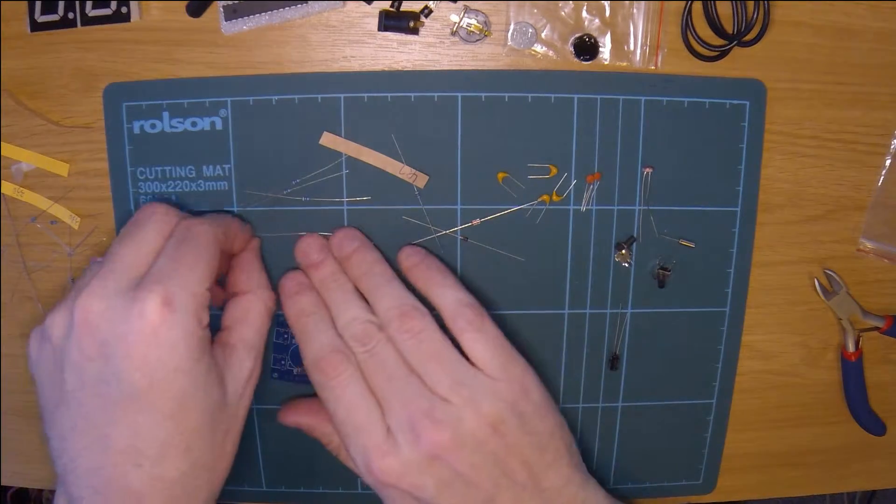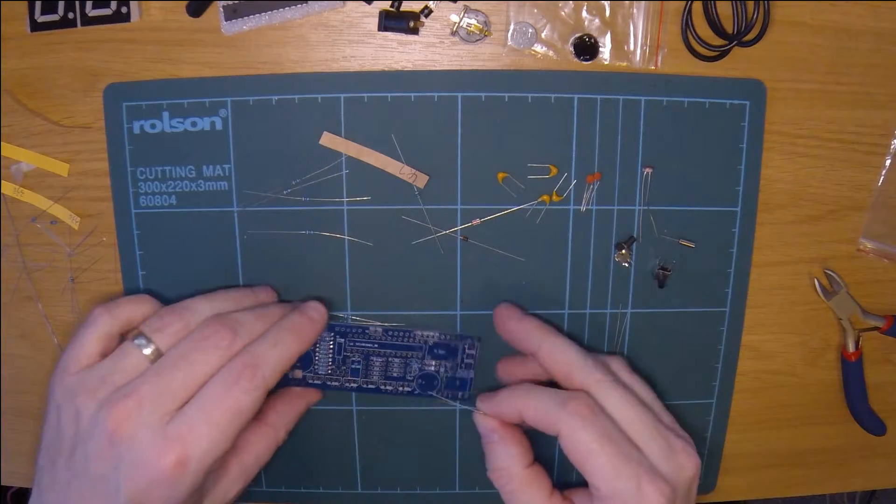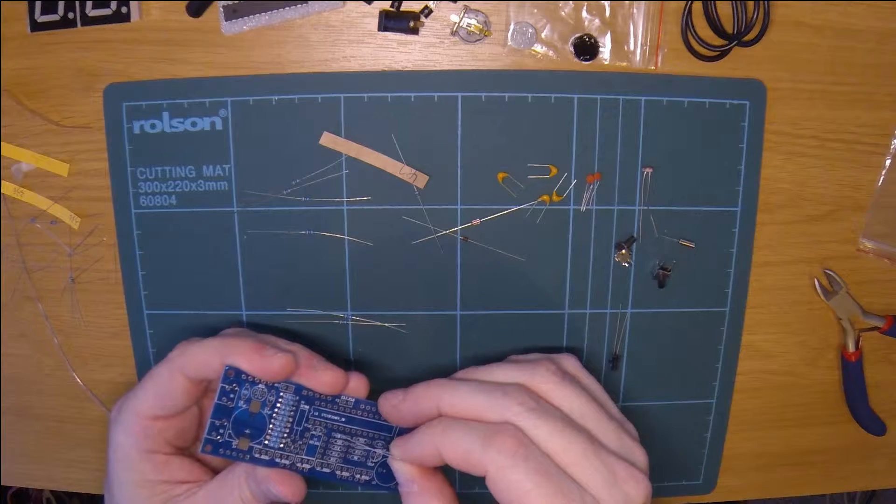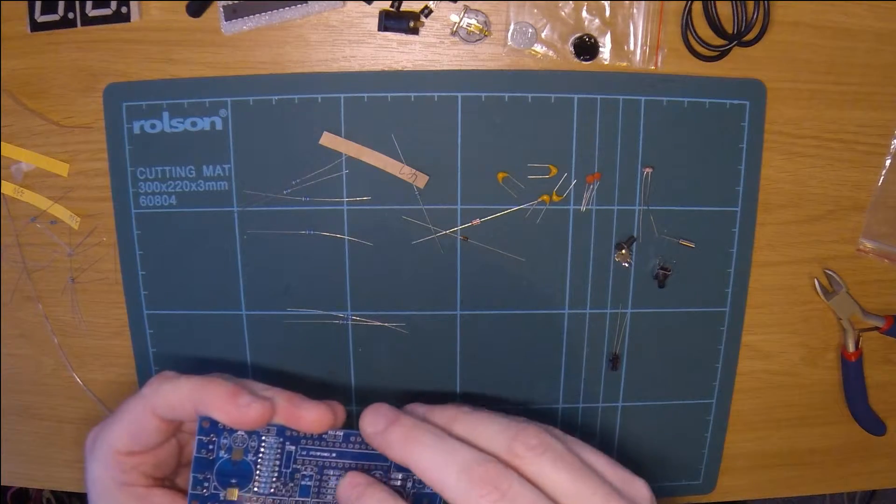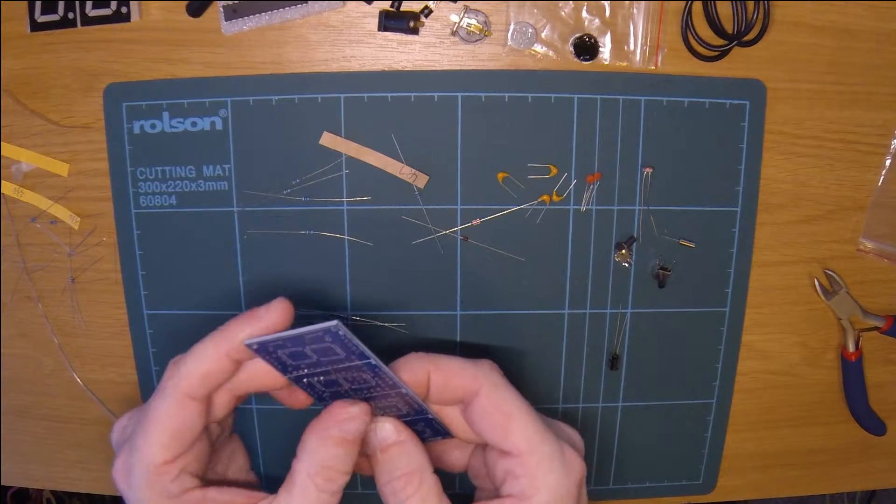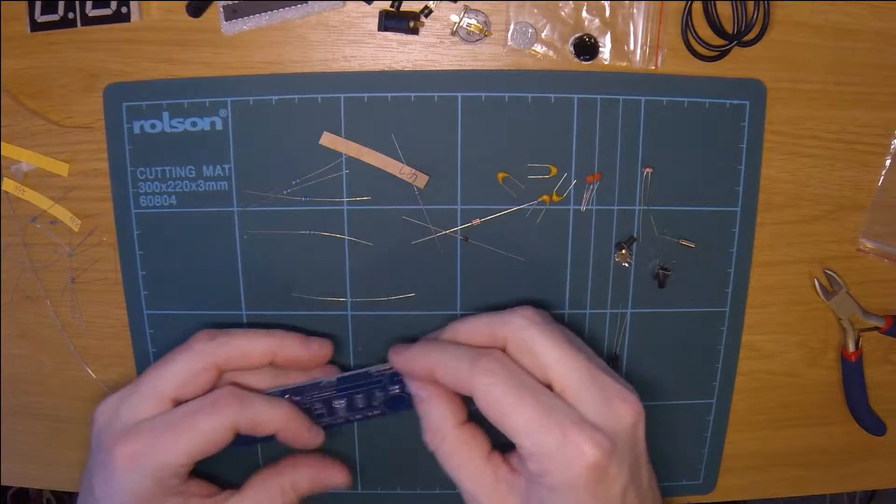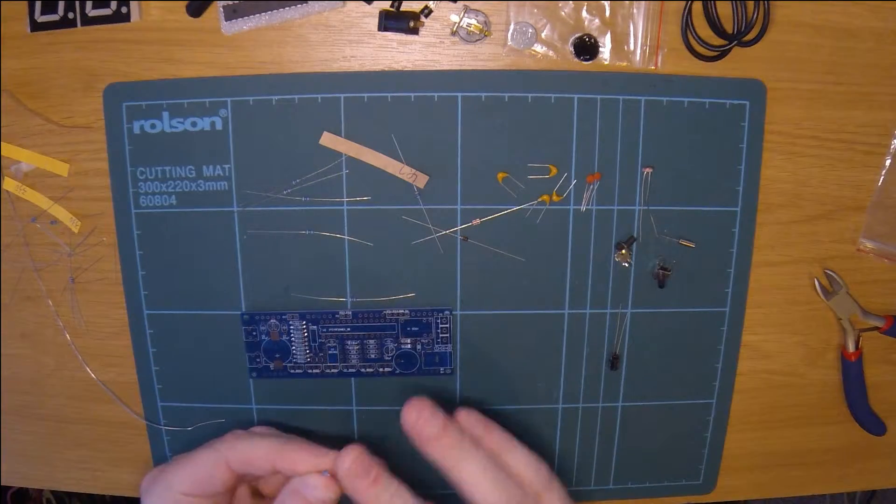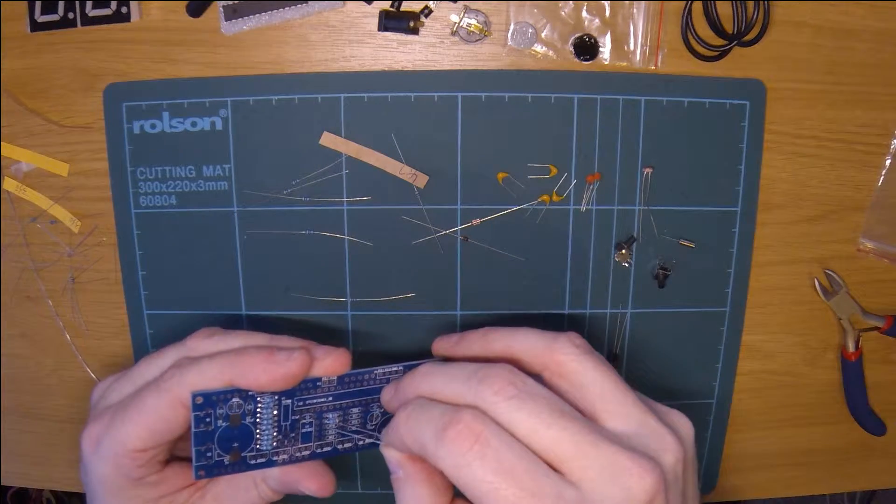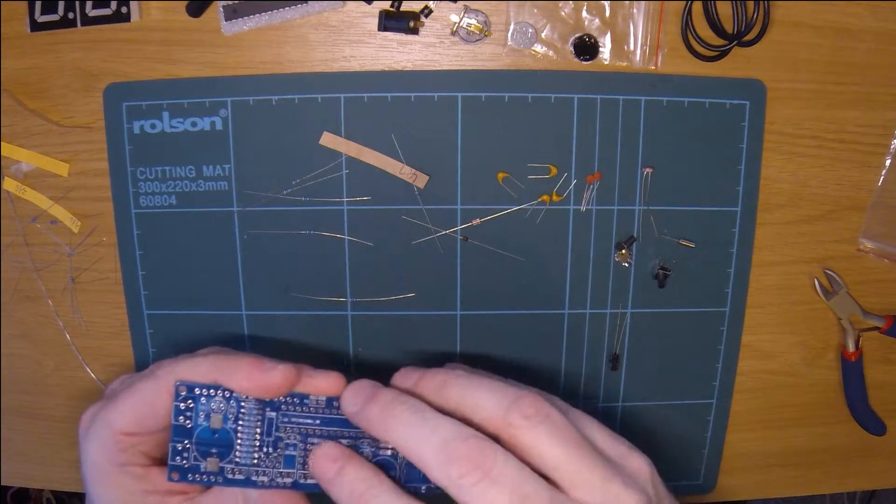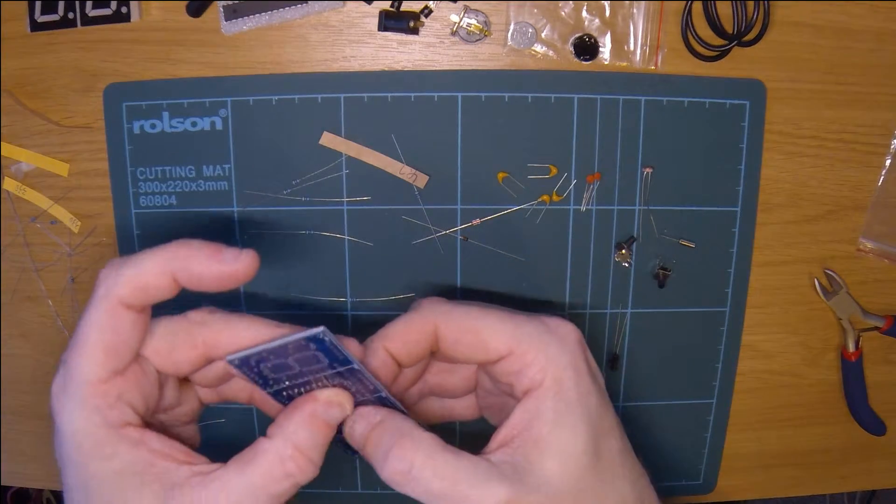These are in two little rows, so one goes in each one of these and that's then the resistors done. So I'll probably be moving over to the capacitors next. The charge of the capacitors - well all of them apart from one - it doesn't actually matter which way round they go in so that makes it quite easy.